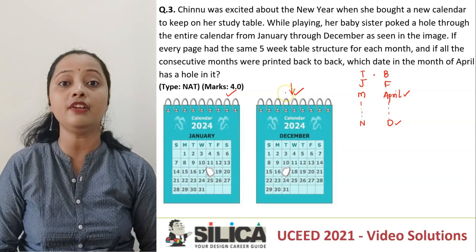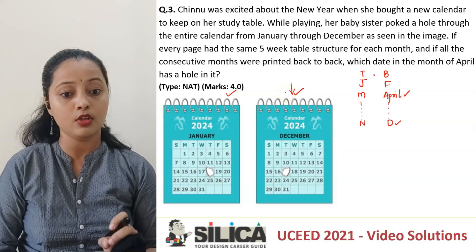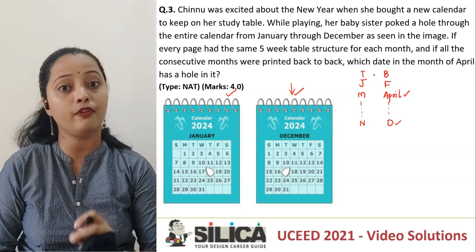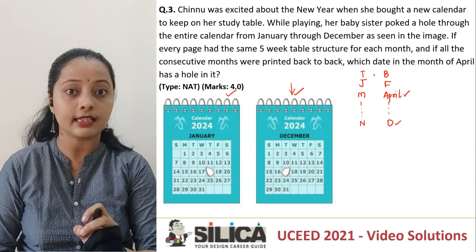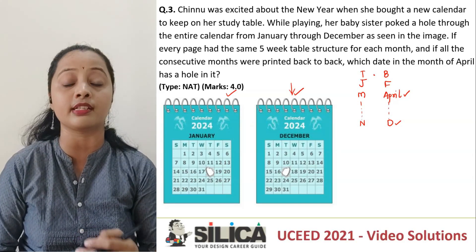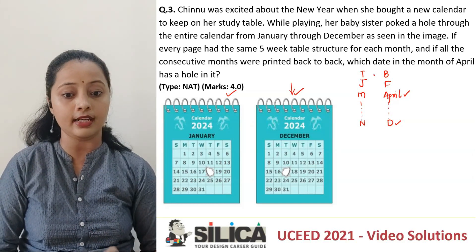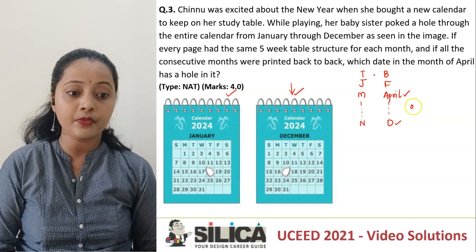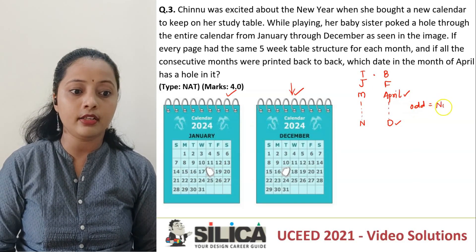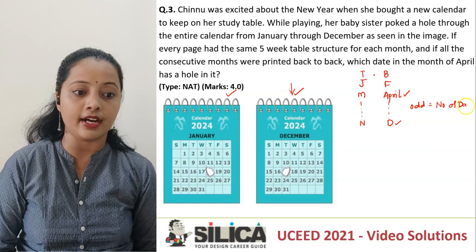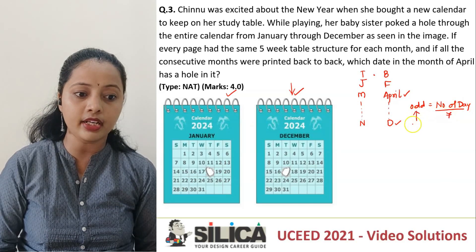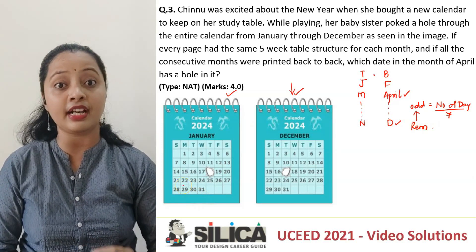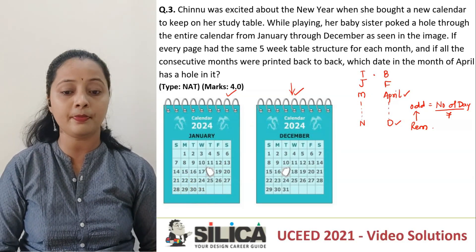We need to figure out on what date will 1st of April lie, because that tells us whether it starts on Sunday or Monday. For doing that, we can use the concept of odd days. Odd days are found by taking the total number of days, dividing by 7, and the remainder is the odd days. As many odd days you have, that many days ahead your day is going to shift.